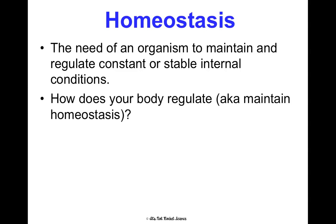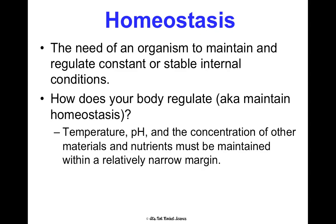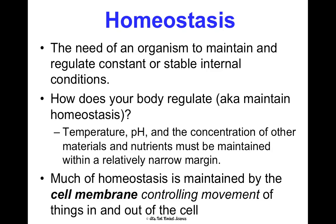How does your body regulate and maintain homeostasis? Things like temperature, pH, and concentration of materials and nutrients all have to be maintained in a relatively narrow margin. Most of us know the body functions at 98.6°F. If it gets too hot, it sweats to cool down. But at the cellular level, most of homeostasis is maintained by the cell membrane controlling what goes in and out of the cell.